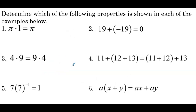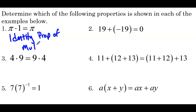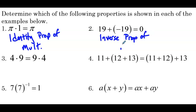Determine which of the following properties is shown in each of the examples below. The first example: pi times 1 is equal to pi. We took pi, multiplied by 1, it remained pi — so that's going to be the identity property of multiplication. Number 2: 19 plus negative 19 is equal to 0. We added two values together and got 0, so this is going to be the inverse property of addition.